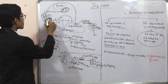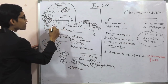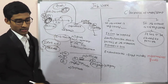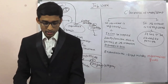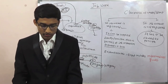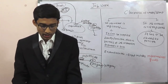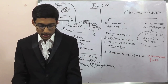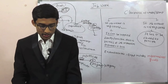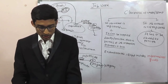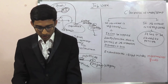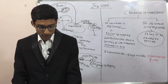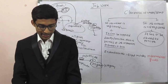If the principal is transporting the goods, he has to issue a delivery chalan in lieu of an invoice. The delivery chalan should contain the following details: date and number of the delivery chalan; name, address, and GSTIN of the consigner and consignee if they are registered; HSN code and description of goods; quantity or provisional quantity where exact quantity is not known; taxable value, tax rate and tax amount; and signature.